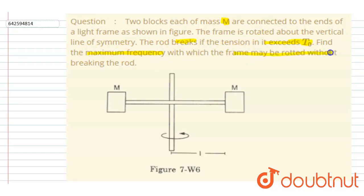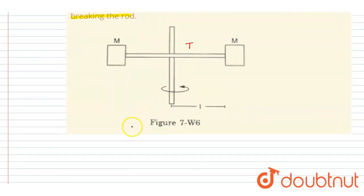So here, let's suppose the tension in the rod is T. So T cannot be more than T naught, so T should be less than or equals to T naught. So we want the maximum frequency.